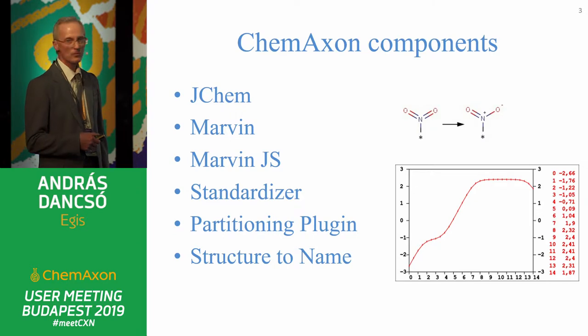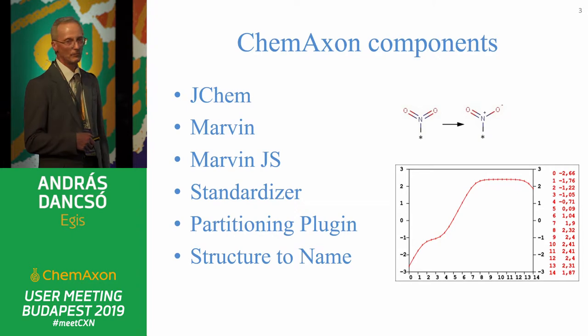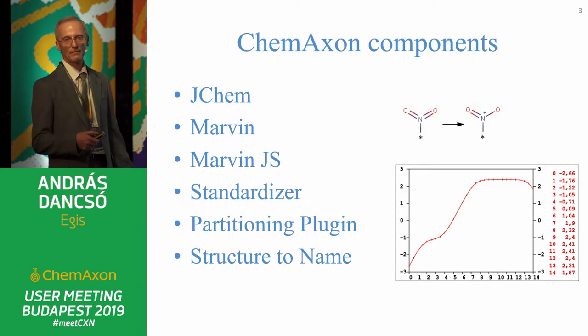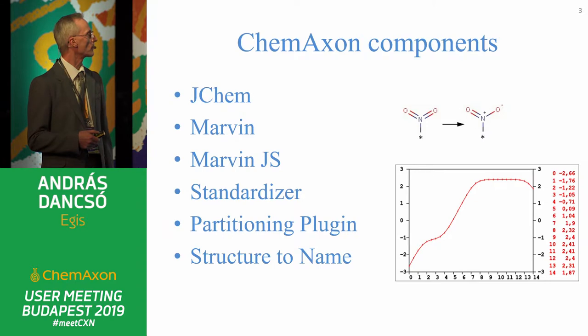The ChemAxon components of this database: JChem is the main thing — storing and searching chemical structures.